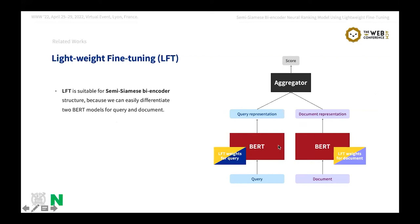Until now, I have explained the necessity of semi-Siamese bi-encoder structure for NRMs and lightweight fine-tuning methods. LFT methods we adopt don't change the pre-trained BERT weights and introduce a few number of new parameters. At this point, we want to say that when we adopt different LFT models to BERT models for a query and document, we can easily and effectively obtain the semi-Siamese BERT-based NRMs. From now, I'll explain how we apply these LFT methods, LFT frameworks for semi-Siamese bi-encoder.